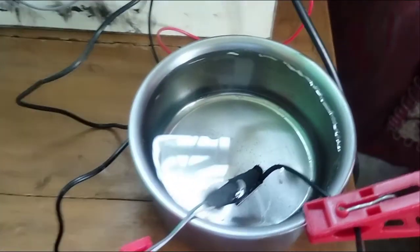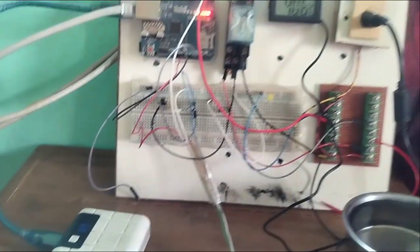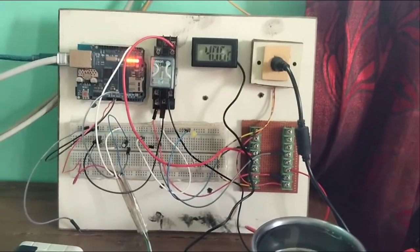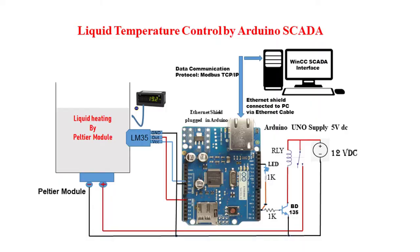Today, SCADA systems using Arduino can be applied in many small-scale control and monitoring systems in defined application areas. There exist a number of ways to implement Arduino SCADA. Modbus TCP/IP communication protocol may be a way to implement this type of Arduino SCADA-based control system. This video will introduce a liquid temperature control system using Arduino with WinCC SCADA interface, and Modbus TCP/IP has been used as the communication protocol for interfacing Arduino to the SCADA host.